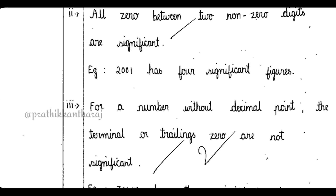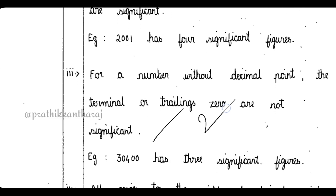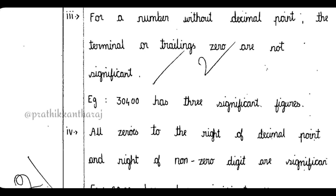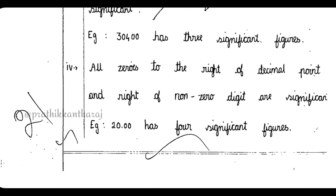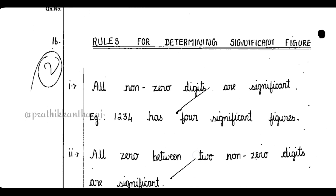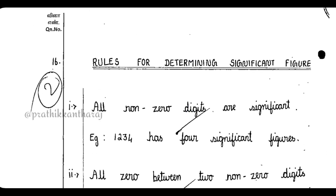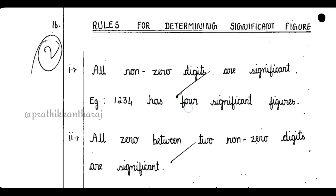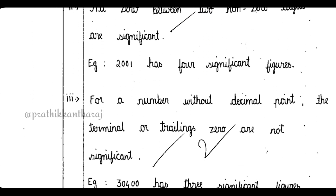If you look at this one, the answer is for 2 marks. Those are the key points. The key points have to be checked — that's why you can present them. For example, in this 2-mark question, there are rules for determining significant influence — those are all the rules you have to follow.